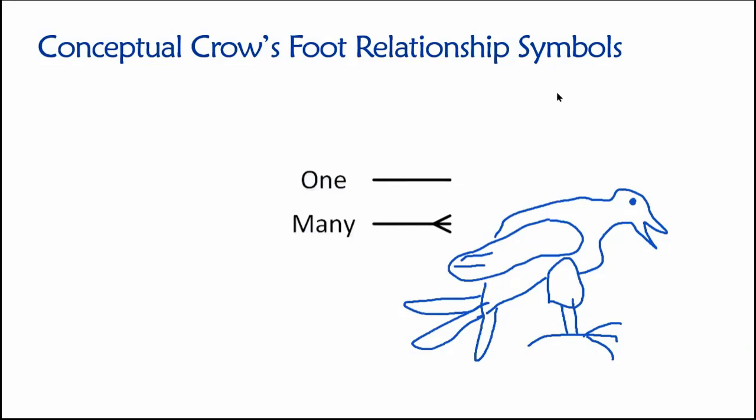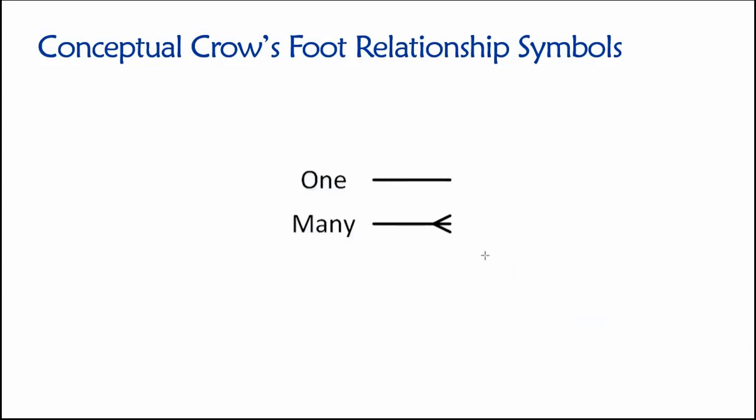We're going to use these symbols to represent some concepts. And the first broad pair of concepts that we need to consider is just this notion of one versus many. So in this case, if we're doing these conceptual relationships, we would use these sorts of lines to interconnect tables and something that looks like this would represent one, something that looks like that would represent many.